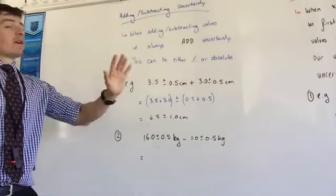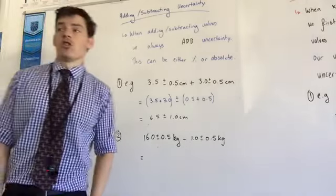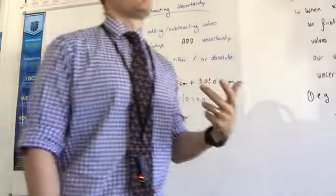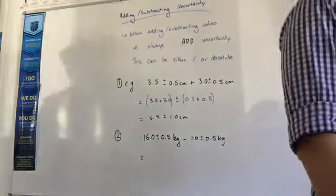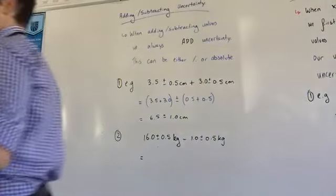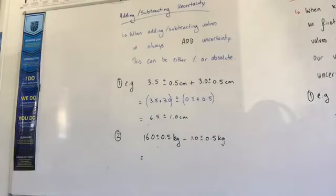We've got two different ways of dealing with uncertainty depending on the operation that we're using. As we know in mathematics, addition and subtraction are linked together. So the rules that we apply for addition are the same as the rules that we apply for subtraction, and divide and multiplication have the same operations going on there.